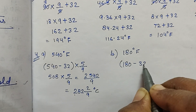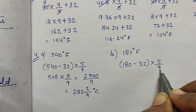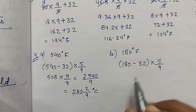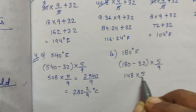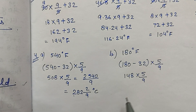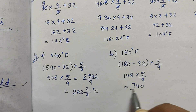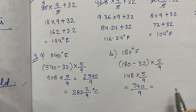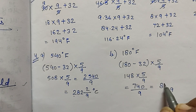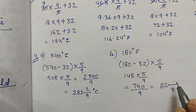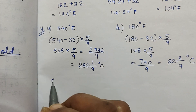Part B: 180 degree Fahrenheit. So 180 minus 32 into 5/9. 180 minus 32 is 148. 148 into 5/9 is equal to 740/9. 9 से divide करेंगे तो आएगा 82 and remainder 2. So the answer is 82 and 2/9 degree Celsius.